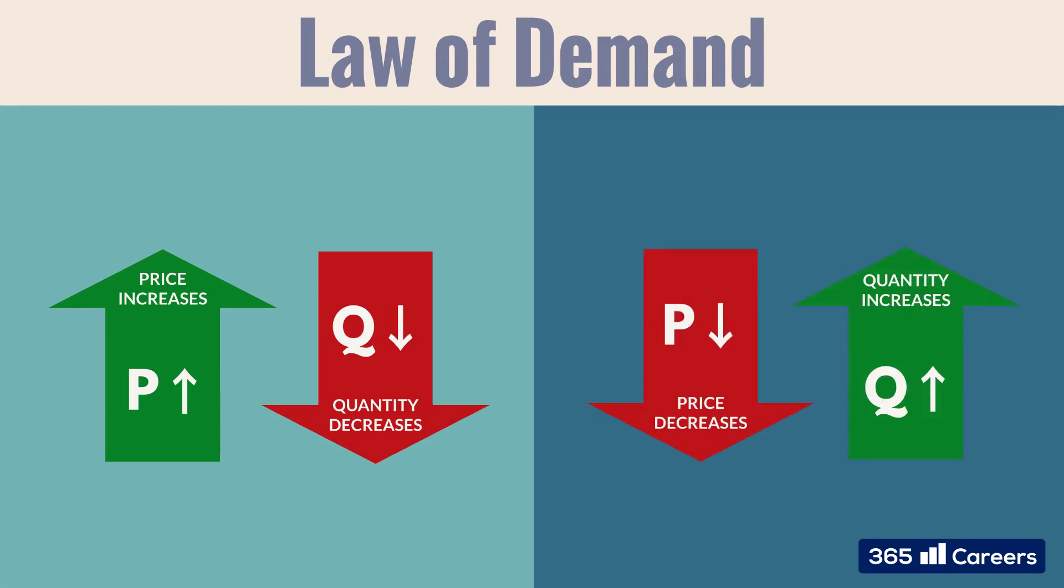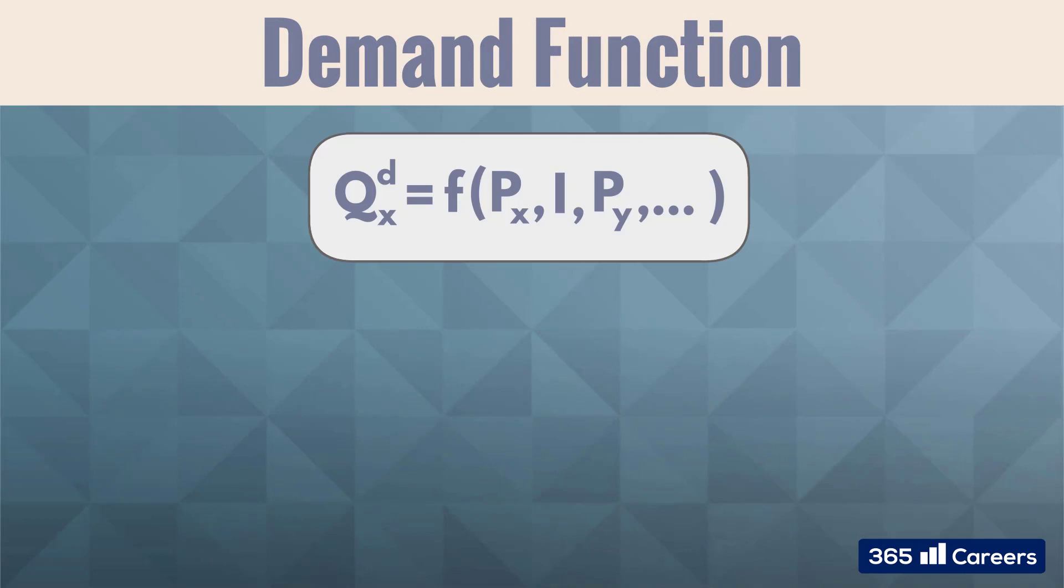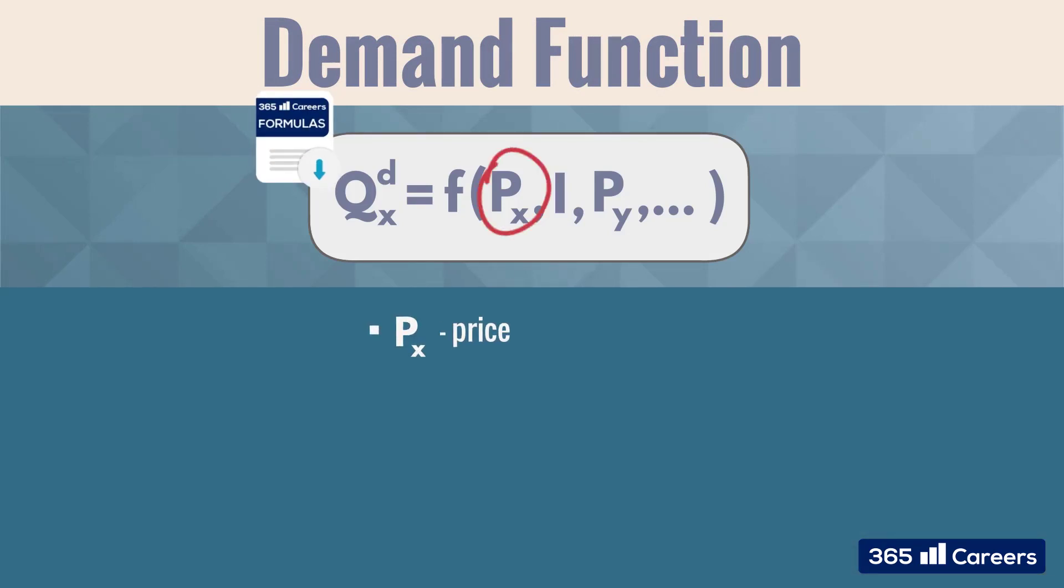All the factors influencing consumers' decision to buy are captured in the following demand function. This is a function driven by variables like price, income, and the price of other goods. However, in order to study the effects on demand, we should look at one variable at a time only and keep the others fixed.